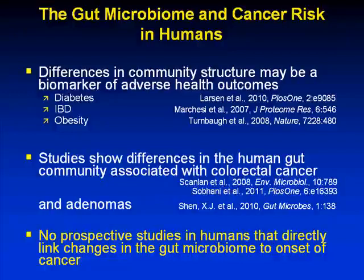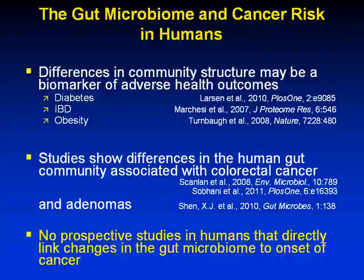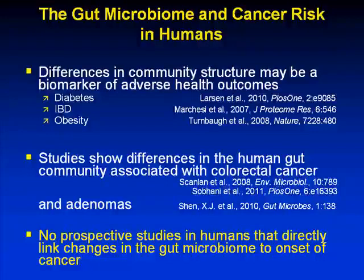With regards to cancer, several studies have shown that the human gut microbial community differs between individuals who have colorectal cancer and those who do not, and similarly between those who have colorectal adenomas and those with a clean colon. The problem with all of these studies is that they're case-control studies — by the time an individual has been diagnosed, we don't know what other components have changed with regards to diet, other factors, and epithelial damage.